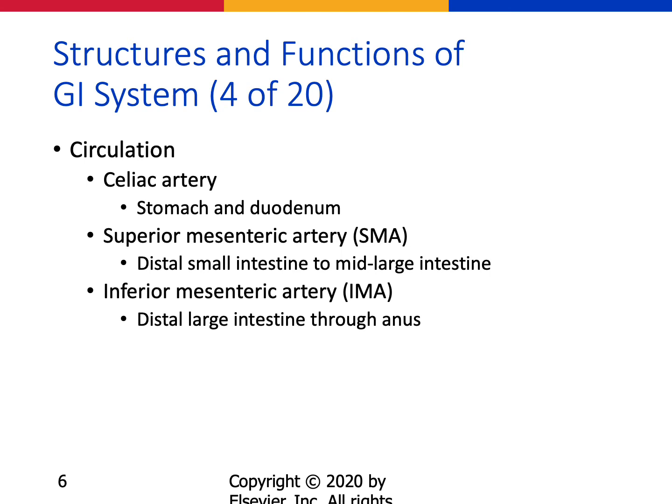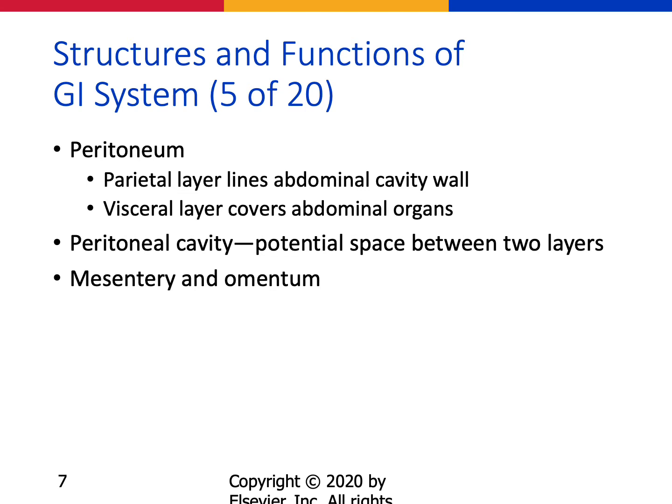This slide talks about how the circulatory system feeds the GI tract, so it's very important to know these anatomical geographical pieces to the puzzle. When we're talking about the peritoneum and peritoneal cavity, this is extremely important regarding potential complications of GI disruptions.